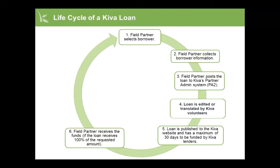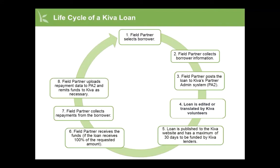As the loan term proceeds, you will collect repayments from the borrower. You will report those repayments in PA2 and remit funds to Kiva, so that Kiva can send the funds back to lenders. And finally, at the end of the loan term, when the loan is fully repaid, you will post a brief update in PA2 to tell lenders how the borrower is doing.